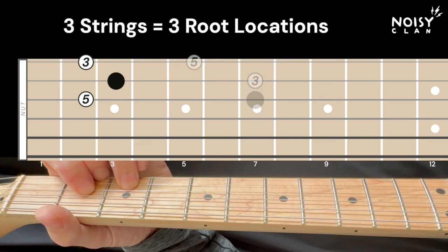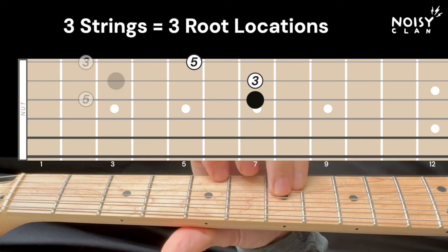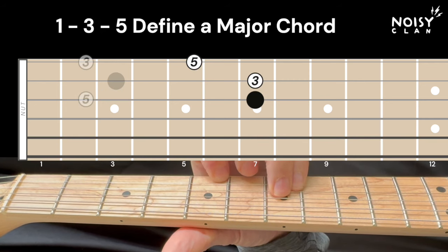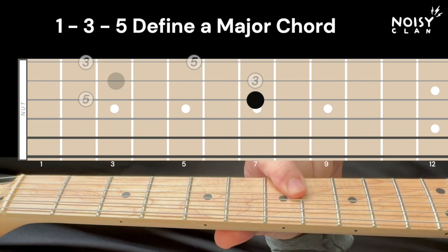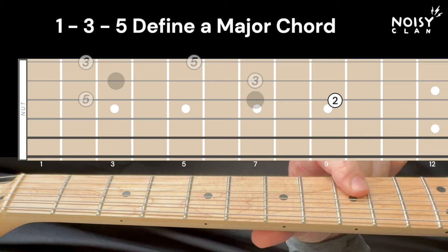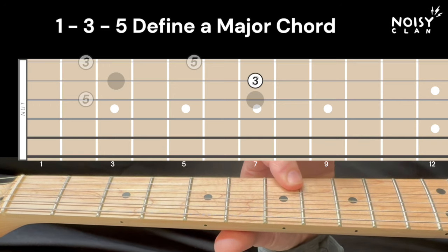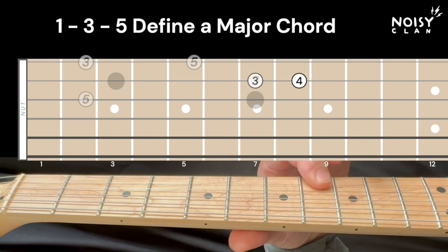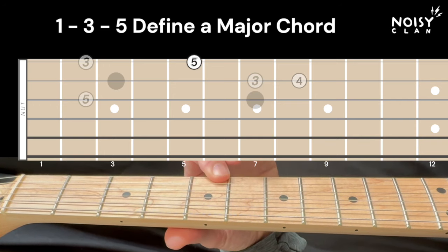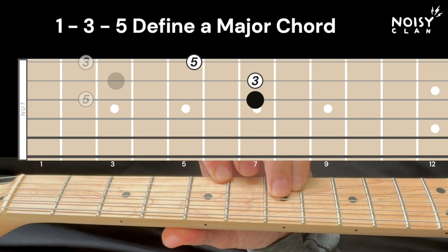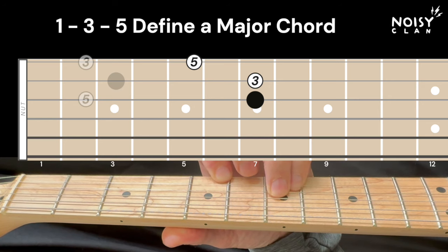Here's the first major triad shape. Here's the second major triad shape. And we can confirm that these notes are correct by playing the notes in the scale — we have the one, three, five, which forms a major triad.